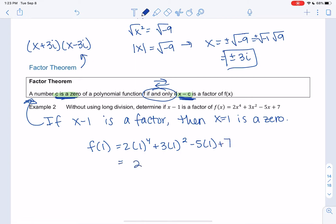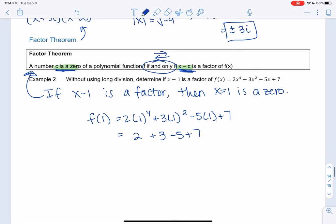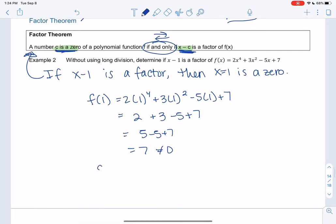So we get 2, we get plus 3, minus 5, plus 7. What's that? 5 minus 5 plus 7, which is 7, which is not 0. So x equals 1 is not a 0, which also means x minus 1 is not a factor. The 2 go hand in hand. It has to be both.